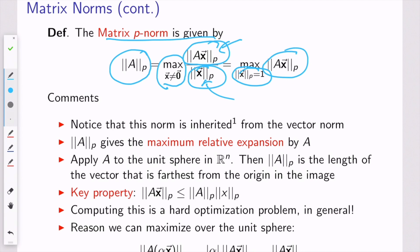To say it geometrically, the p-norm of the matrix is the length of the vector that is farthest from the origin in the image of the matrix acting on the unit circle. Something that follows from the definition is that the p-norm of the image of a vector x under matrix multiplication by A has to be less than or equal to the p-norm of the matrix times the p-norm of that same vector.